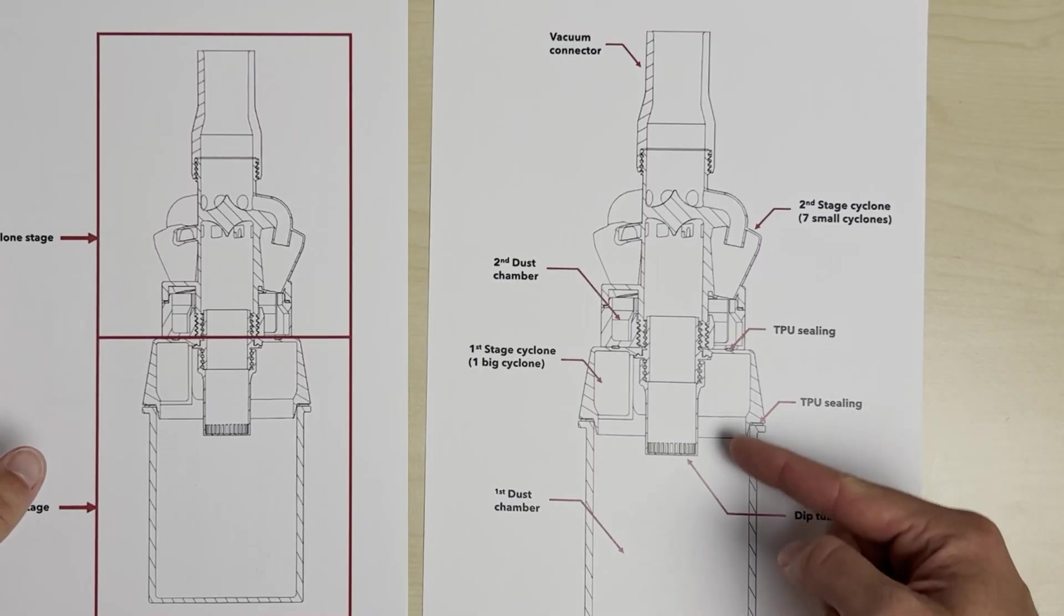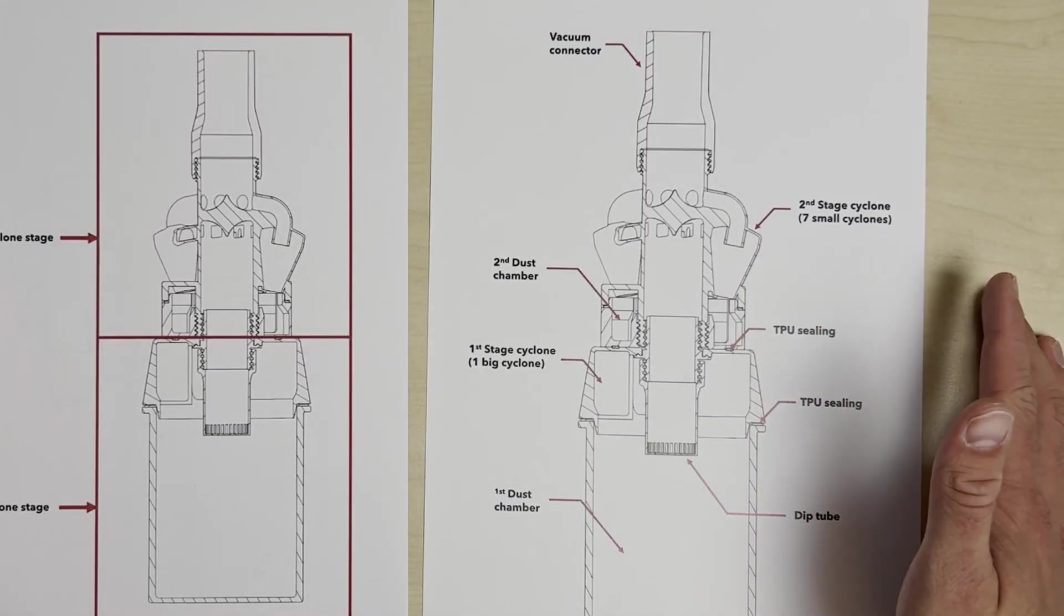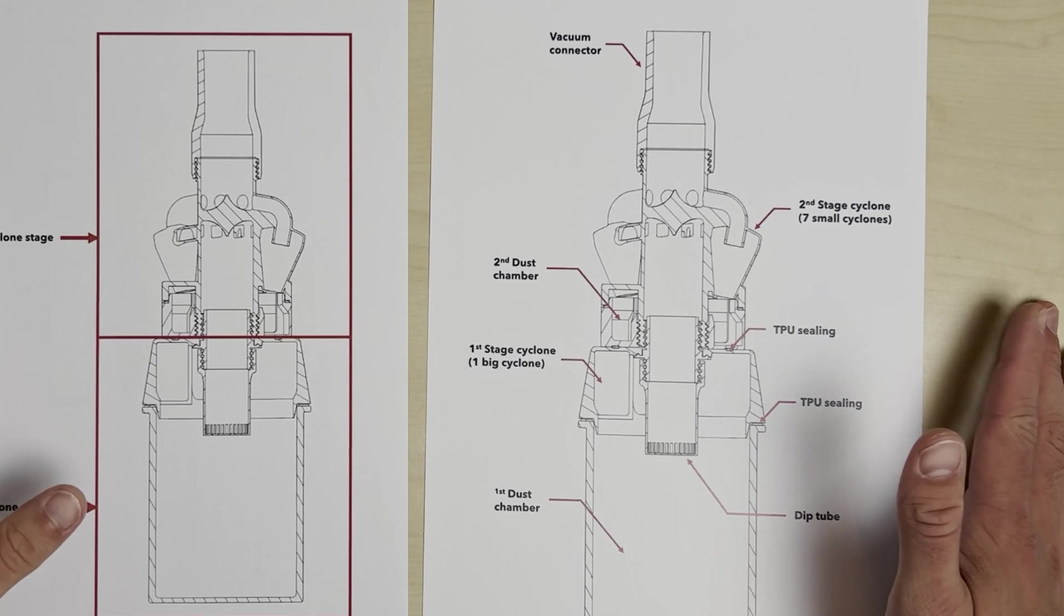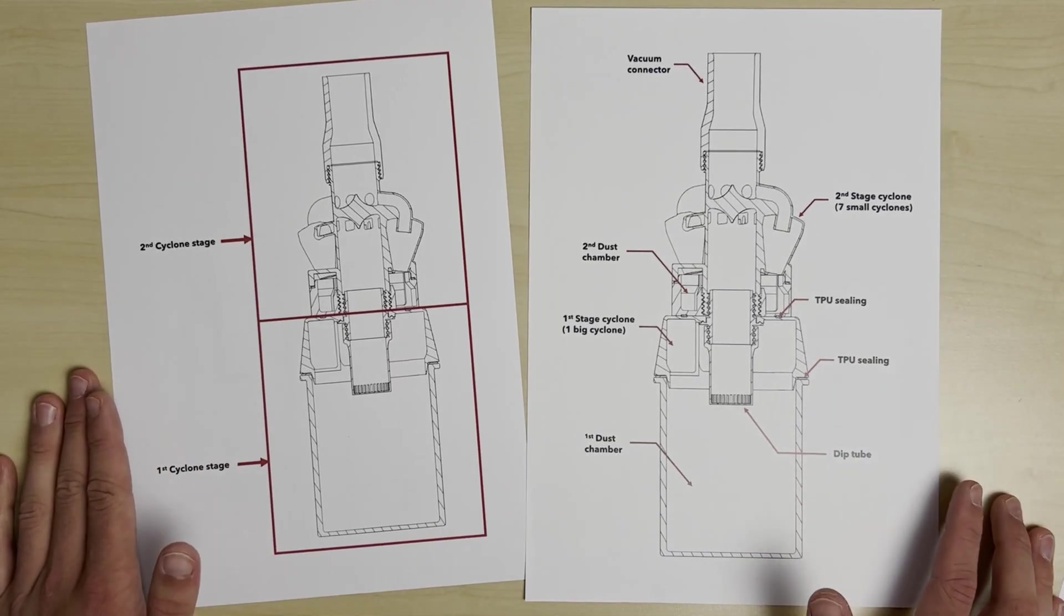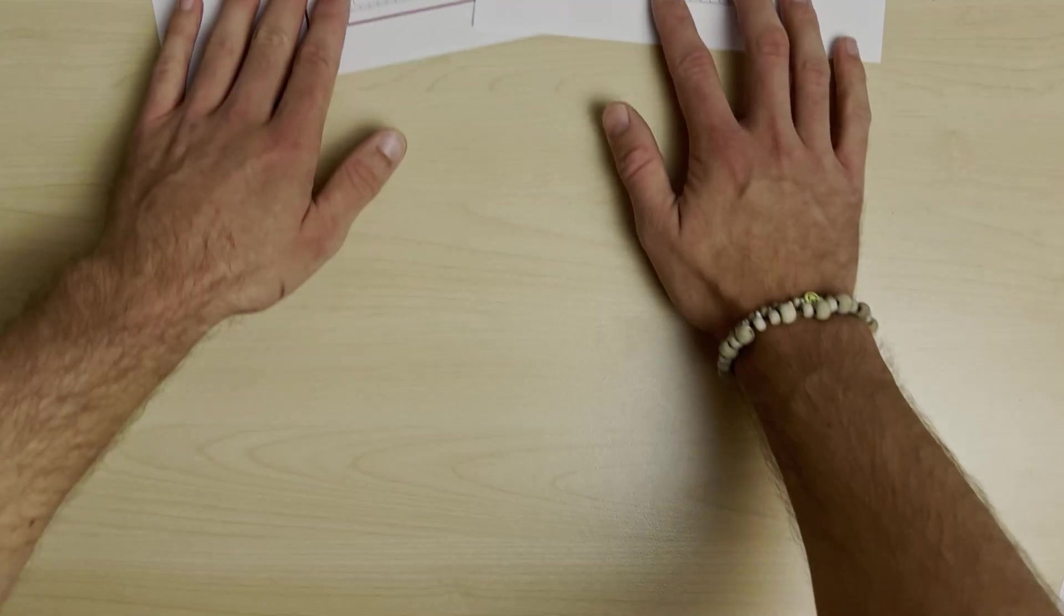In theory, you want the cross-section of the airflow to stay roughly the same throughout the whole device. And since you need smaller cyclones to separate smaller particles, that means more of them are needed to keep up with the airflow from the bigger stage below.